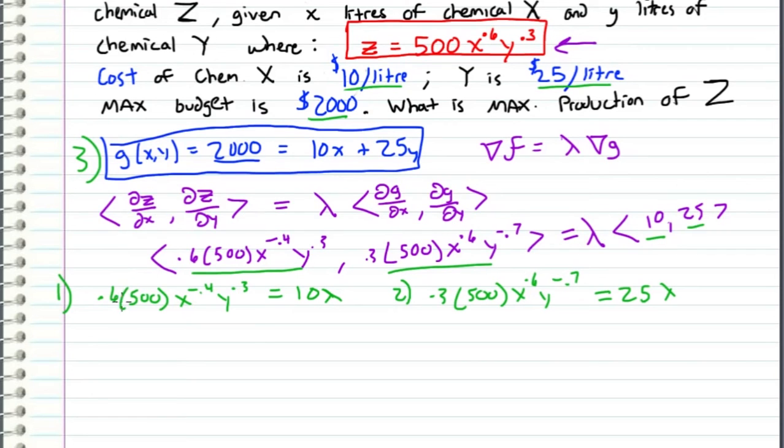So if I multiply equation one by 5/2 I get 5/2 times 0.6 times 500 x^(-0.4) y^0.3 and this is going to equal 25 lambda, because I multiplied by 5/2, but this also equals 25 lambda so I'm just going to set these two equations equal to each other. So this is going to equal 0.3 times 500 x^0.6 y^(-0.7). These 500's cancel out and then 0.6 over 2 cancels out with 0.3 and I can rearrange this into 5y is equal to x.